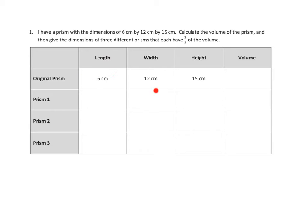Okay, let's see. Let's do the simple part first. Let us figure out the volume of this original prism. 6 centimeters by 12 centimeters by 15 centimeters. I'm going to do that over here on the side. So that's 6 centimeters times 12 centimeters times 15 centimeters.